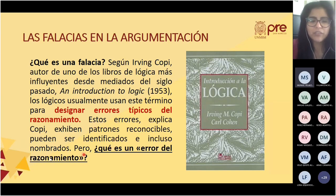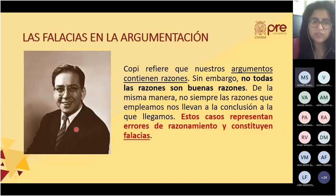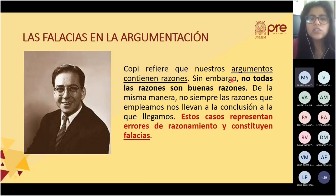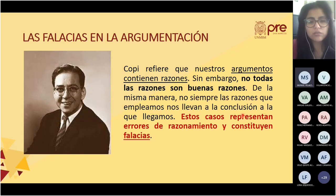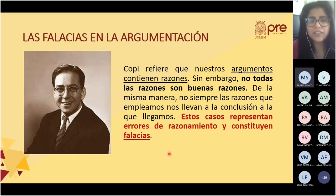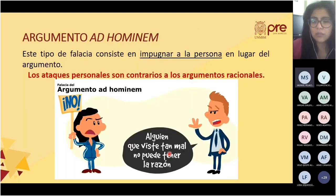¿Pero qué es un error del razonamiento? Kopi refiere que nuestros argumentos contienen razones. No todas las razones son buenas razones. De la misma manera, no siempre las razones que empleamos nos llevan a la conclusión a la que llegamos. Estos casos representan errores de razonamiento y constituyen falacias. La primera falacia que vamos a ver hoy es el argumento ad hominem.